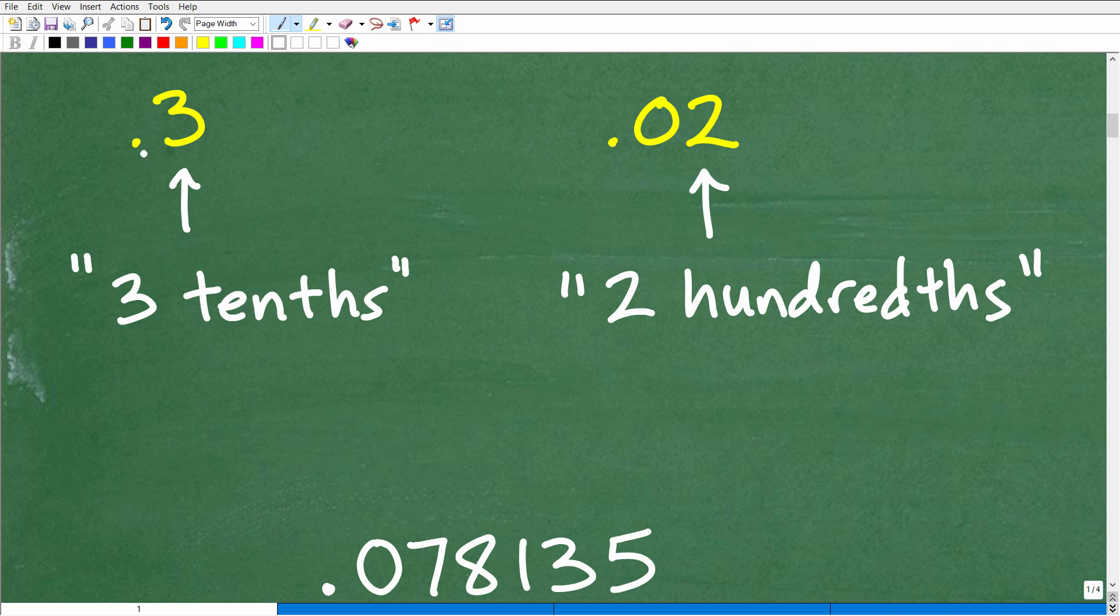So let's take this decimal 0.3. So I said, hey, how would you say this decimal here? Most of you might say that's 0.3. Some of you might say that's 3 tenths. So for those of you that can describe this decimal 0.3 as 3 tenths, that's outstanding.